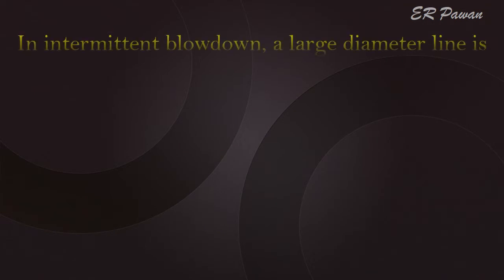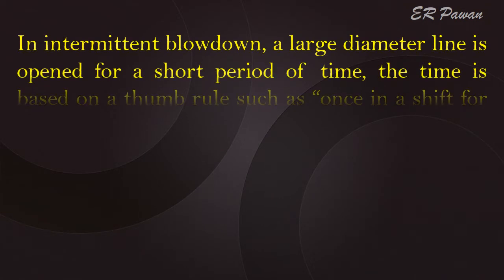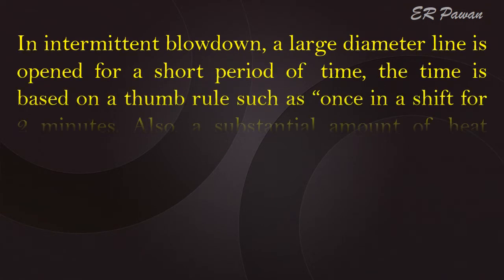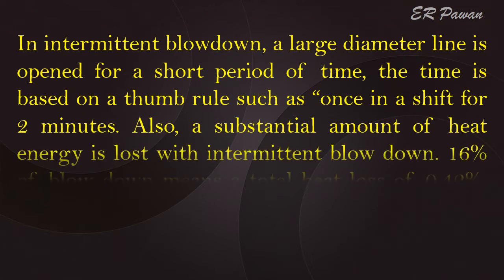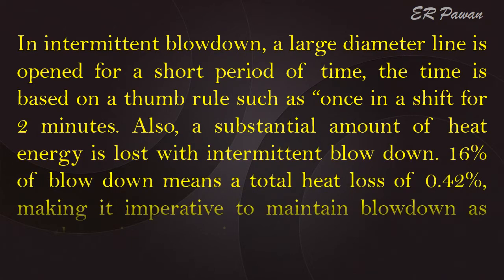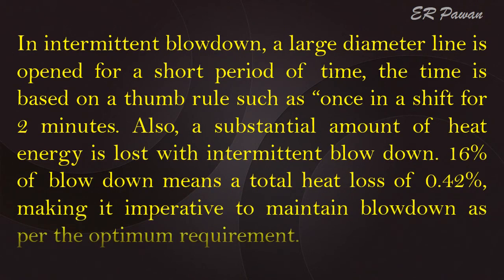In intermittent blowdown, a large diameter line is opened for a short period of time. The timing is based on a rule of thumb, such as once per shift for two minutes. A substantial amount of heat energy is lost with intermittent blowdown — a 16% blowdown means a total heat loss of 0.42%, making it imperative to maintain blowdown as per the optimum requirement.